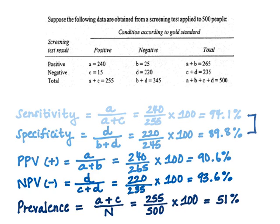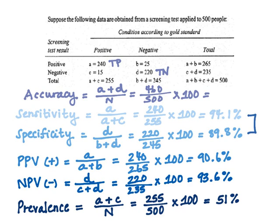Lastly, we can calculate accuracy, which is true positives plus true negatives (A plus D) divided by the total N. This equals 460 divided by 500, multiplied by 100, to yield a 92 percent accuracy — quite good. This means this test is an effective screening tool in epidemiology.